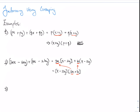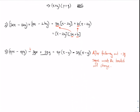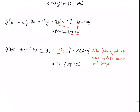Example three: 4px minus 4py minus 3qx plus 3qy. In the first two terms, 4p is common, so we factor out 4p, giving us 4p times x minus y. In the second two terms, negative 3q is common — remember, when we have a negative, we can factor out the negative. Factoring out negative 3q and changing the signs inside the bracket gives us negative 3q times x minus y. This leaves us with x minus y times 4p minus 3q.